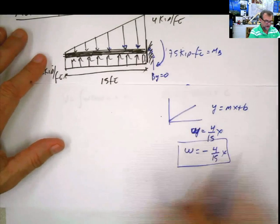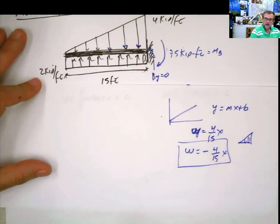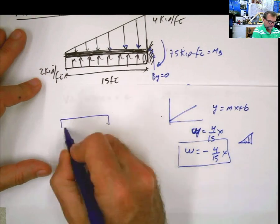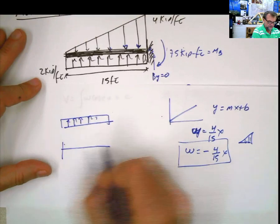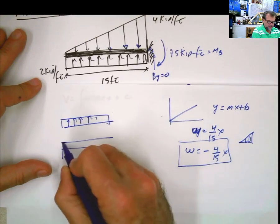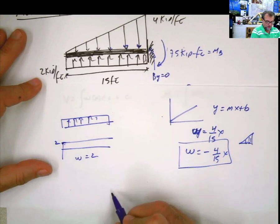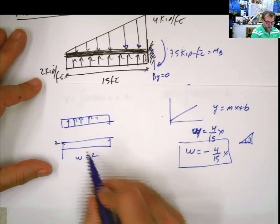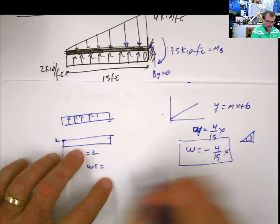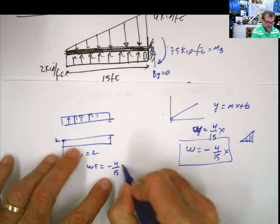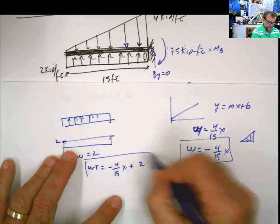For the rectangular load, the equation is simply w = 2, because it's a constant horizontal line. So I combine the two: the total load equation is w = -4/15 · x + 2. The triangular term is negative and the rectangular term is positive.